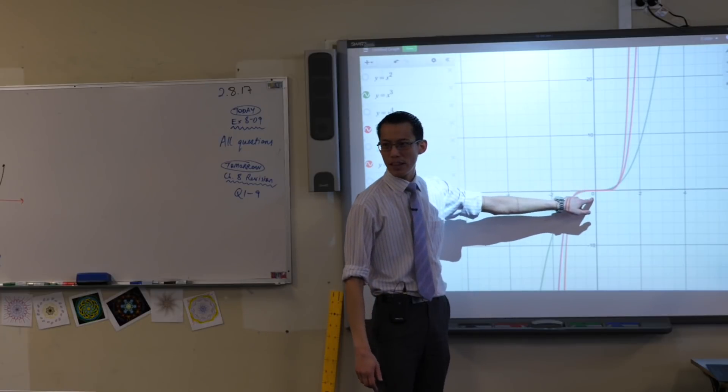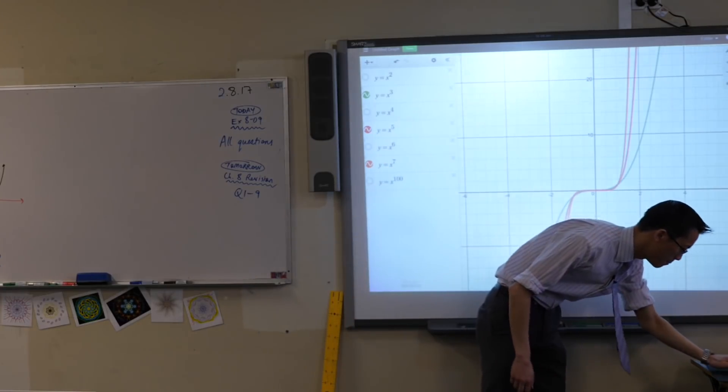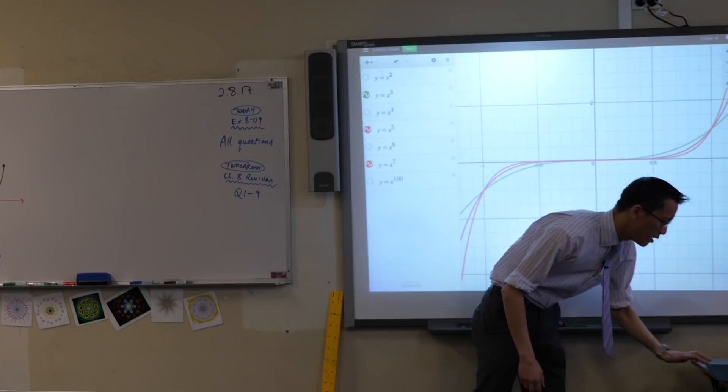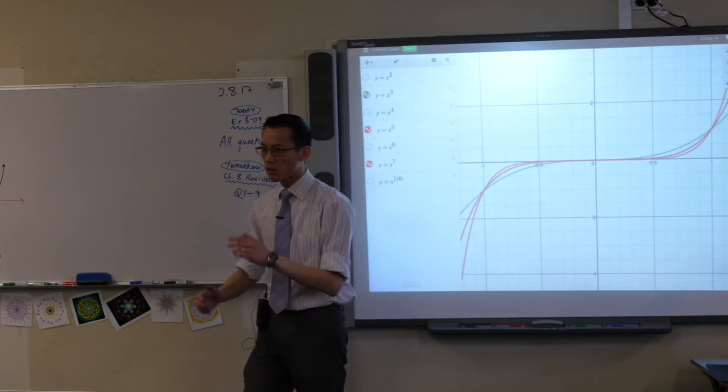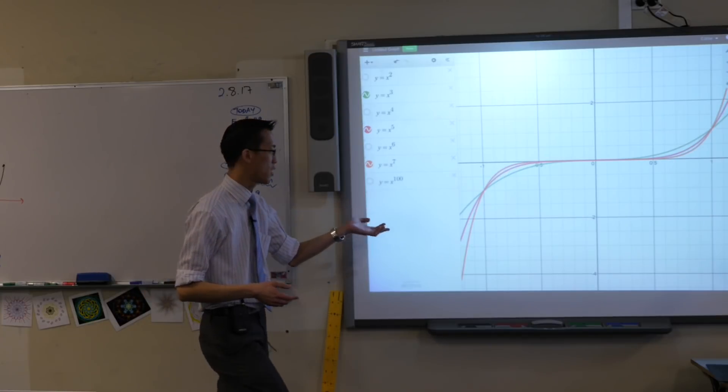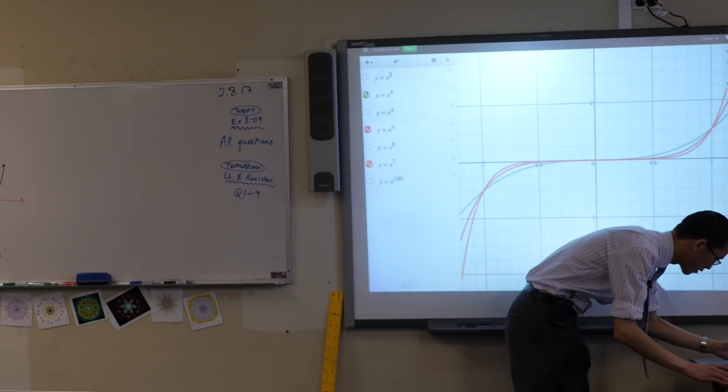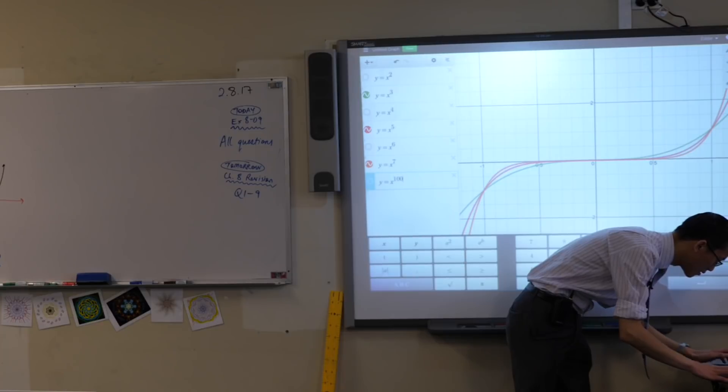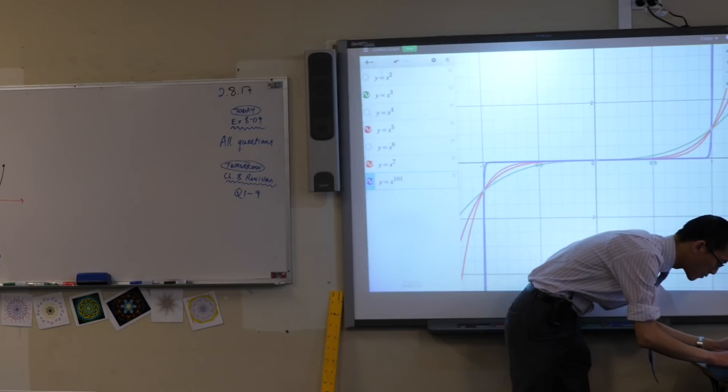But they're also flatter and flatter. If you zoom in, just like it looked like it was getting really square. Go ahead and put in x to the power of 101. What's it going to look like? There we go.